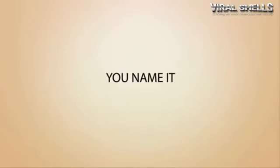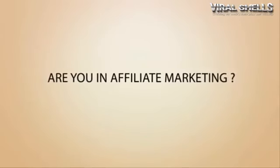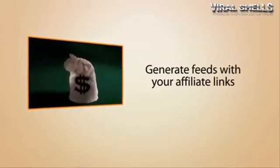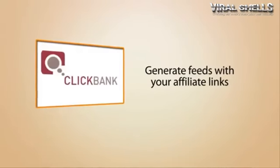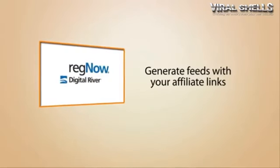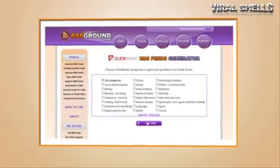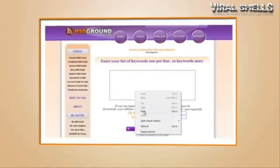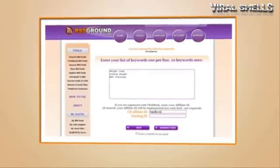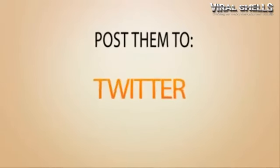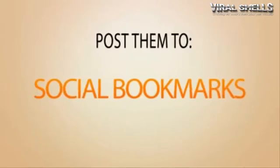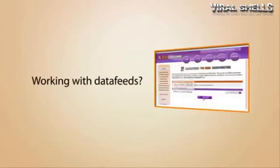Are you into affiliate marketing? You can use special affiliate feed generators to generate feeds with products from eBay, Amazon, Clickbank, and RegNow. The process is simple: type in a list of keywords, insert your affiliate ID, and get a list of affiliate RSS feeds with your affiliate ID already embedded in each link. Post them to your website, blog, Facebook account, Twitter, RSS directories, and social bookmarking websites, and start collecting commissions.